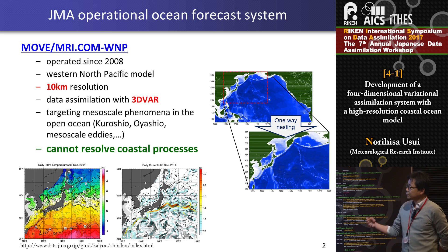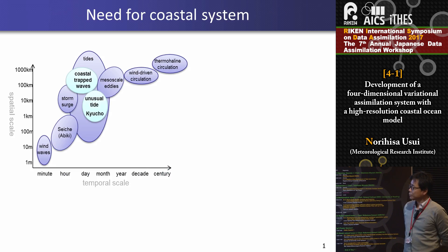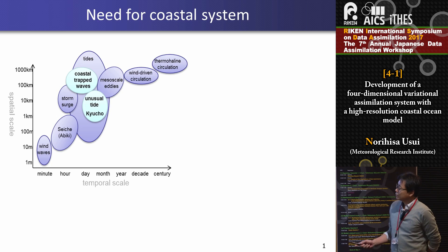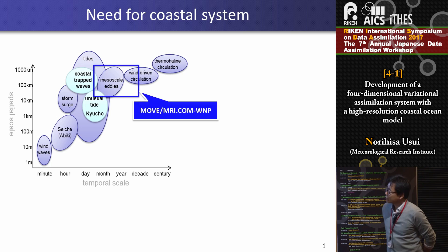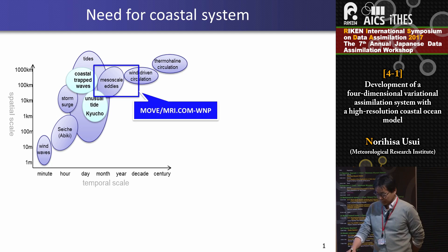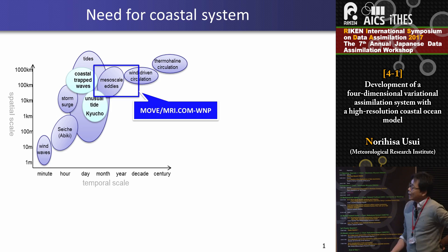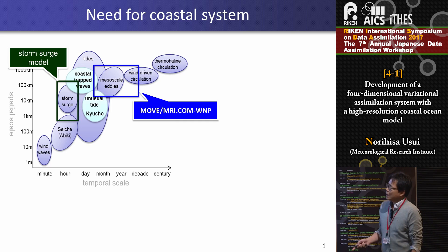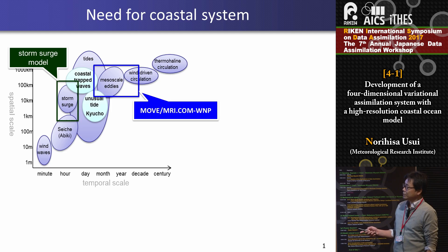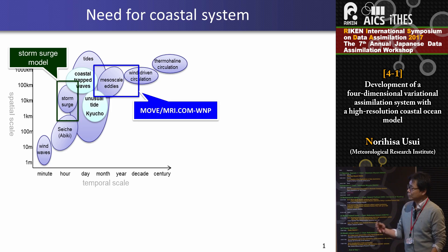The typical scale of coastal processes is about 10 km in space and a few days in time. This figure shows a temporal and spatial scale of various ocean phenomena. The present operational system covers mesoscale eddies and wind-driven circulation. JMA is also operating a storm surge model — it is a very high-resolution model, but it is based on a barotropic model, so it cannot represent the coastal baroclinic processes. As a result, there is a gap between the coverage of these systems, so various coastal processes cannot be represented by this operational model.